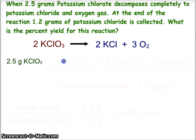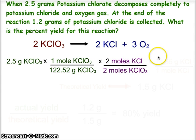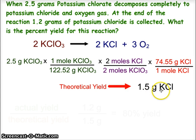We begin with the stoichiometry, taking that 2.5 grams of potassium chlorate using the gram formula mass of potassium chlorate. We can then use the mole to mole ratio from the balanced chemical equation, then use the gram formula mass of potassium chloride, and we get a theoretical yield of 1.5 grams of potassium chloride.